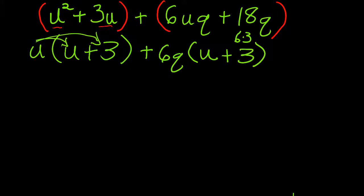And again, you can distribute the 6q to the u. That will give you 6uq. And you can take the 6u and multiply it by the 3 and you'll get 18q, which is what you started with.